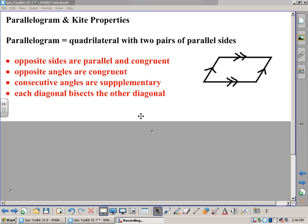Here we go on our next toolkit entry for Chapter 7. This one is called Parallelogram and Kite Properties. We're going to be talking about two different polygons here, the first of which is the parallelogram. By definition, it's a quadrilateral, that means four sides, with two pairs of parallel sides. Go ahead and draw this picture right here in your notebook.